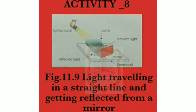Activity 8 is about showing the reflection of light by a plane mirror. Things needed: a torch, plastic comb, large thermacol sheet, fevicol, quick fix, and a mirror. Method: Take a plastic comb with very fine teeth and fix it on one side of a large thermacol sheet using fevicol or quick fix, as shown in Figure 11.9. Spread a dark colored sheet of paper on the thermacol. Fix a mirror by pressing it into the thermacol sheet in an inclined position. We observe that light passing through the comb is in straight lines, and the light reflected by the mirror is also in straight lines, showing a similar pattern.